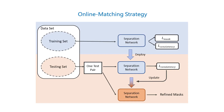Inspired by the fact that humans may spend more time observing and exploring repeatedly when encountering unfamiliar objects, we introduce the online matching mechanism during the inference stage so that the model can better fit the new instrument category. Specifically, the framework will make explicit adjustments for each sample pair by recurrently updating the model parameters from the supervision of the consistency loss.